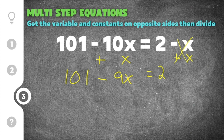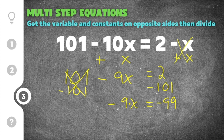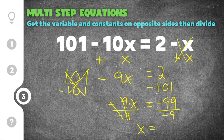Next we get the constants together. The 101 is on the same side as x, so I subtract 101 from both sides — the 101s cancel, and 2 minus 101 is negative 99, giving us negative 9x equals negative 99. Finally, I divide both sides by the coefficient, which is negative 9. Since the coefficient is negative you have to include the negative when you divide. Negative 99 divided by negative 9 is positive 11, so the solution is x equals 11.